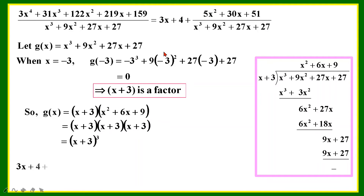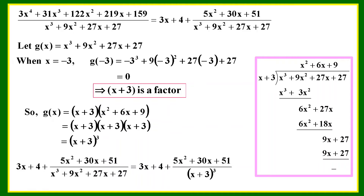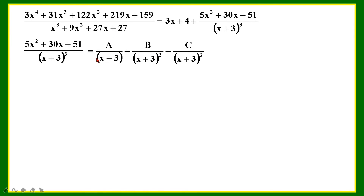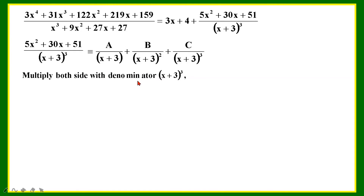So the question can now be rewritten with the remainder over (x plus 3) cubed. The numerator now has a lower degree than the denominator, and the denominator is properly factorized. The next step is to find the correct partial fraction format. Since this is a repeated factor, we write a over (x plus 3), plus b over (x plus 3) squared, plus c over (x plus 3) cubed. We have a, b, and c to solve.